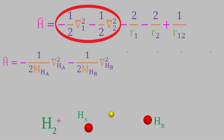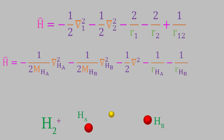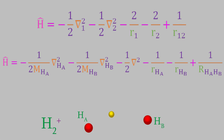Next we need a term for the kinetic energy of the electron. That'll look just like the one in the helium Hamiltonian, except this time we don't need a subscript because there's only one electron in this system. Next, we need terms for the attraction between the electron and the nuclei — there are two nuclei, so there are two terms. In the denominator is the distance between the electron and the nucleus, either nucleus A or nucleus B. Finally, we need a term for the repulsion between the nuclei. Notice we're using a lowercase r for distances that involve an electron, and a capital R for distances that only involve nuclei.